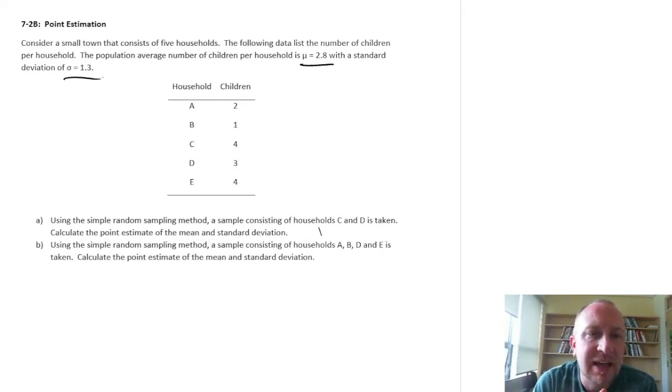So part A, using a simple random sampling method, we have a sample of only two households, C and D. So we have our first sample size n equals 2. And we want to calculate the point estimate of the mean and standard deviation.